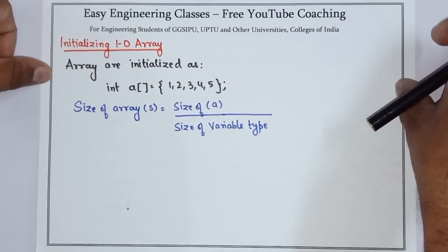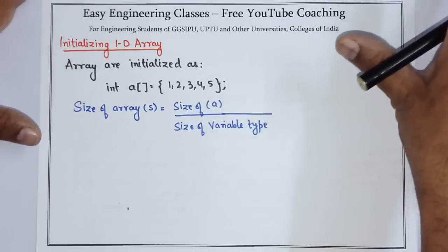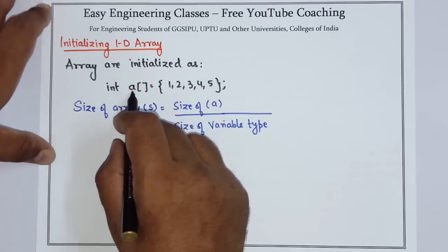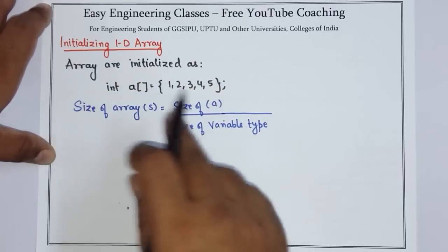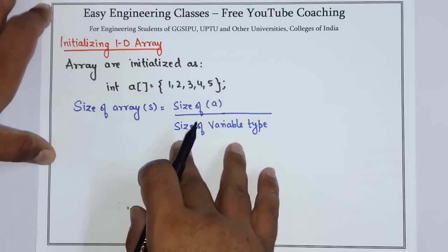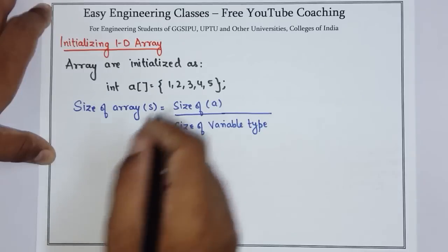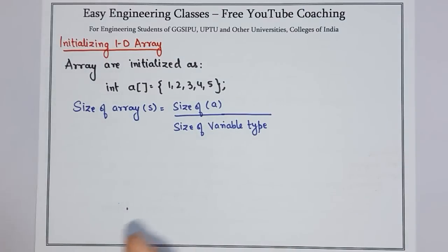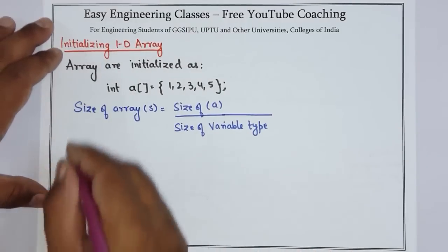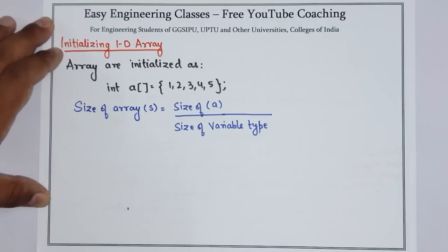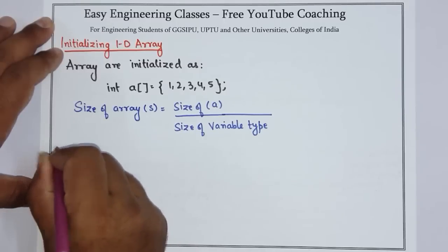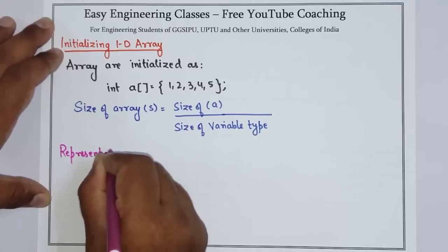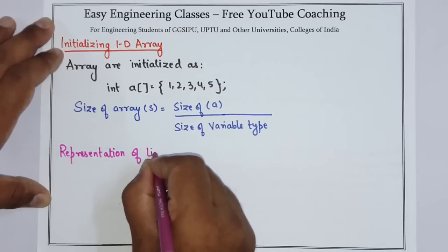Next is how we can initialize an array, and we will also see the representation of linear arrays in memory. Arrays can be initialized with data type, name, and values. The size of the array is sizeof(a) divided by the size of the variable type. Now we will see how we can represent a linear array in memory, including a formula for finding the address of any element.